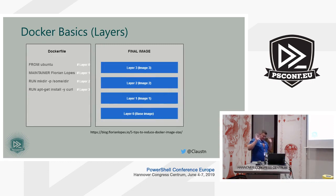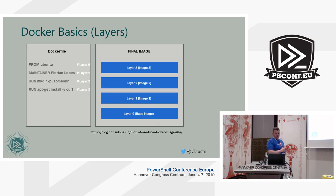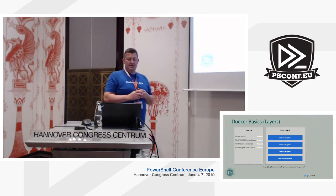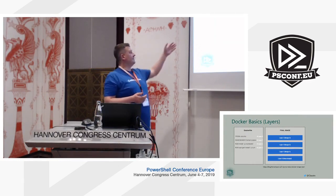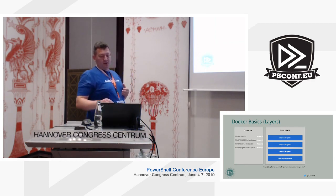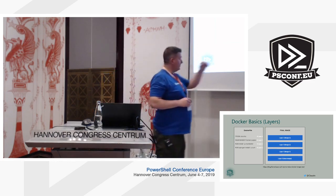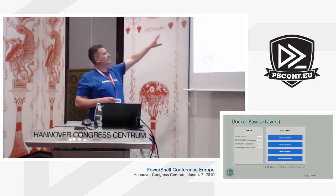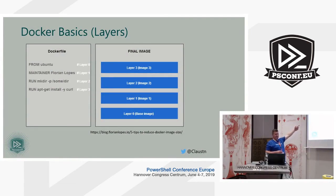A little bit about the layers — again, very basic Docker. You have a Docker file, which is the description of what you want your image to look like. In this example, the Docker file says I want to inherit from the Ubuntu image, then I have a maintainer tag that is actually being deprecated, and then you run the commands needed to set up your environment — making a directory and running apt-get install curl. So my final image will consist of four layers: the base Ubuntu layer, the maintainer layer, the make directory layer, and the layer with the installed curl files.